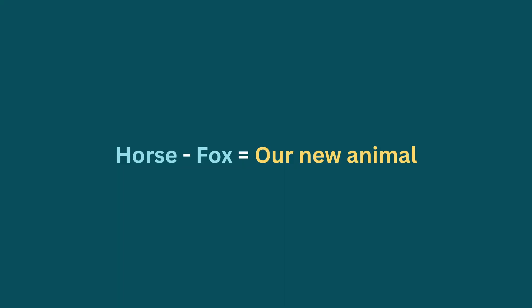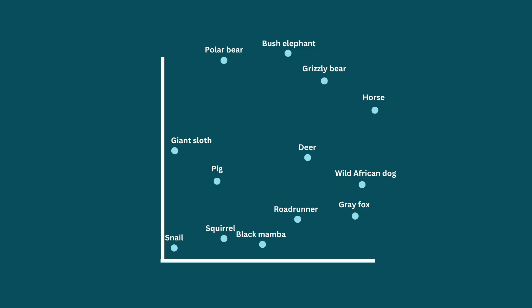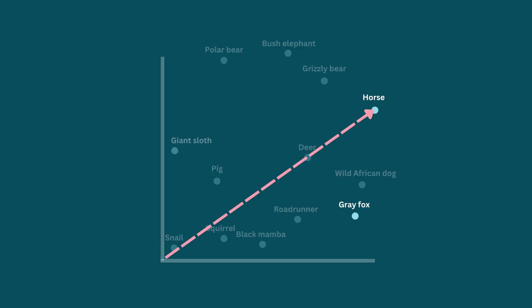What does that even mean? Doesn't matter because we can figure it out. So if we were to represent this request as a weird animal math formula, it might look like horse minus fox equals our new animal. So let's take a look at our graph. To get to horse, we take this path. To get to fox, we take this path.